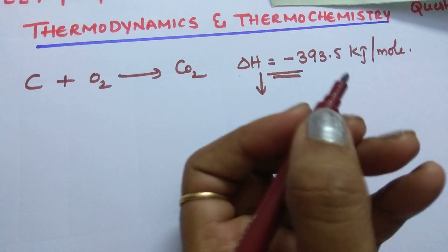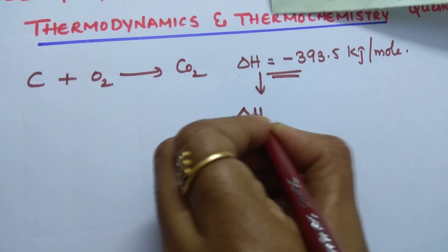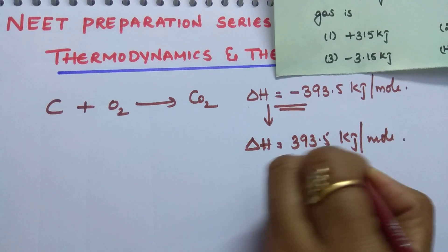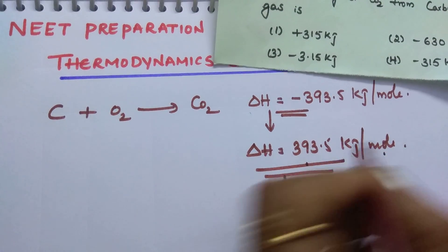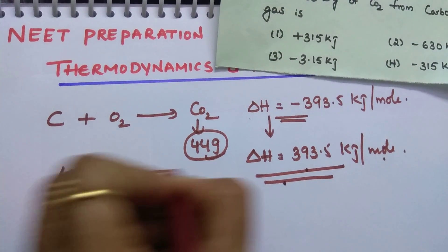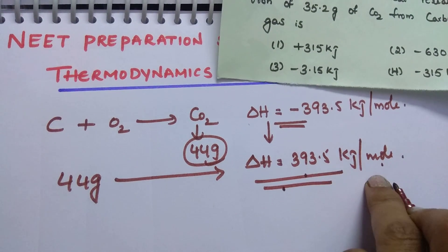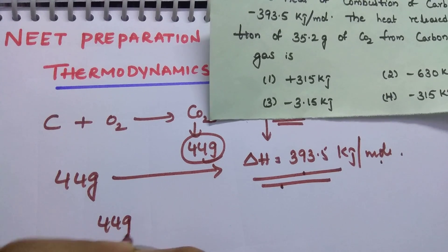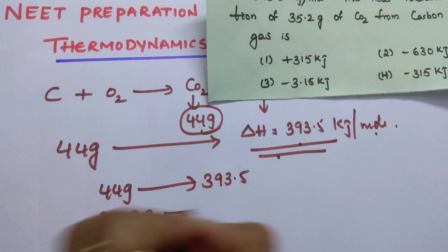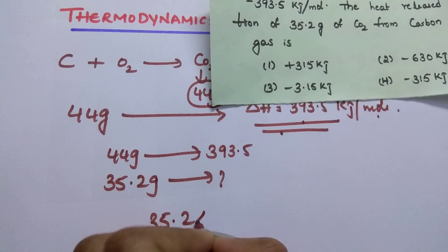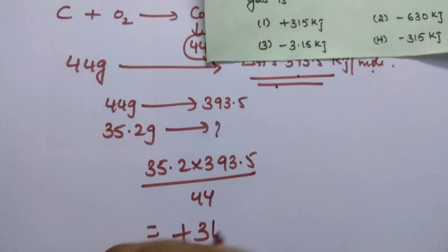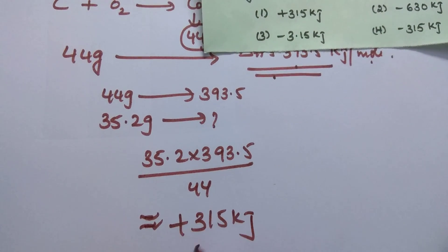The heat released during combustion and the heat required during formation will have opposite sign. So delta H equals 393.5 kilojoule per mole — this is the amount of energy required for formation of 1 mole, which means 1 mole of CO2 equals 44 grams. So 44 grams of CO2 requires 393.5 kilojoule. For 35.2 grams: 35.2 × 393.5 ÷ 44, which gives approximately 315 kilojoule of energy.